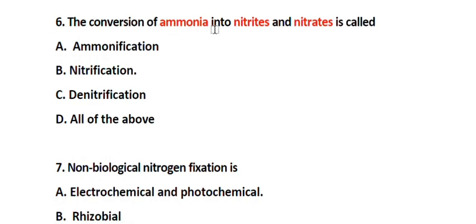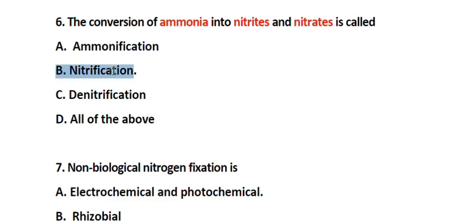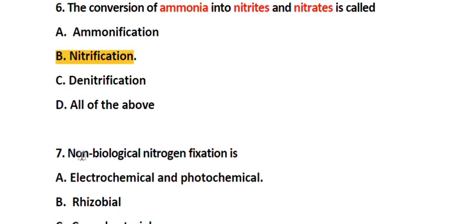Question number 6. The conversion of ammonia into nitrite and nitrate is called: Option A. Ammonification, Option B. Nitrification, Option C. Denitrification, Option D. All of the above. The correct answer is Option B. Nitrification.